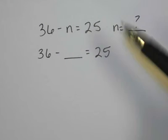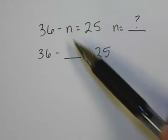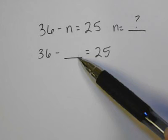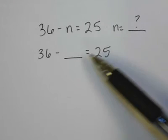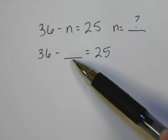So what I tell students to do first is really just take out the letter completely and fill it in with a blank. So 36 minus blank is equal to 25. Now they're really looking for the missing piece and it looks a little simpler to them.